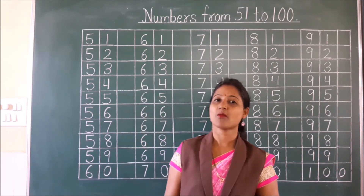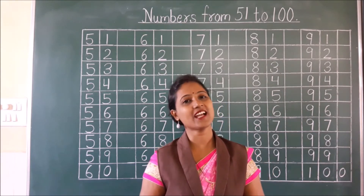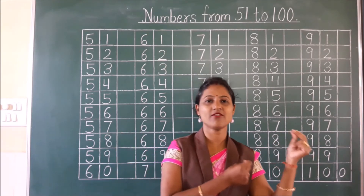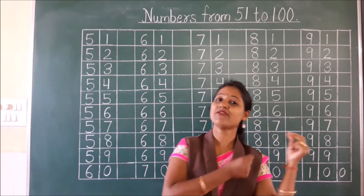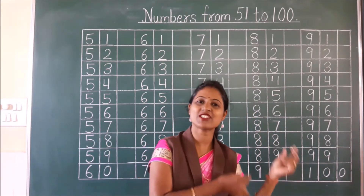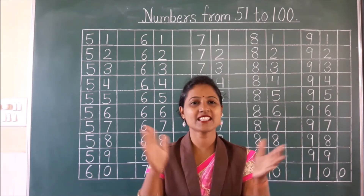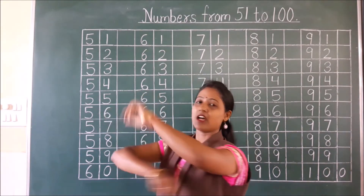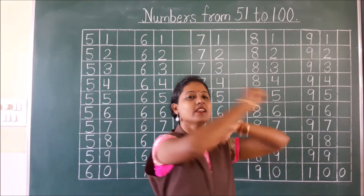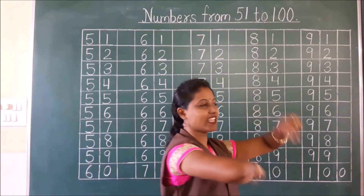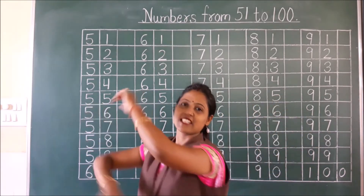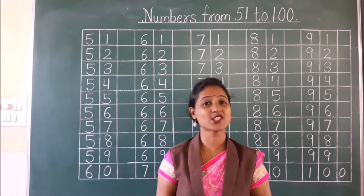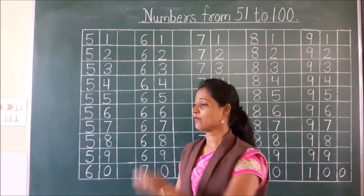Now children, I hope we have revised our numbers. Now we will do a quick revision. First we will start with 51. Snap your fingers and count: 51, 52, 53, 54, 55, 56, 57, 58, 59, 60. Now let's do rolly polly: 61, 62, 63, 64, 65, 66, 67, 68, 69, 70.